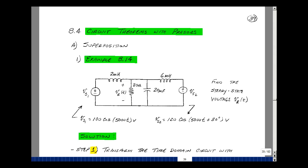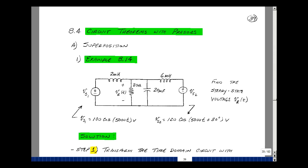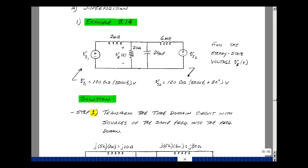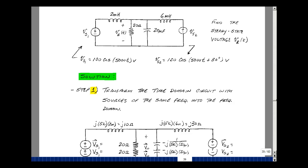We'll use our three-step algorithm to solve for V sub r of t. The first step is to transform the circuit from the time domain to the frequency domain. So here I have an inductor of 2 millihenries, frequency is 5,000 radians per second, so j omega L turns out to be j10 ohms.